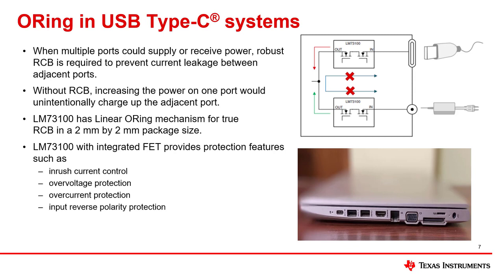To achieve reliability in an application, multiple power sources are connected together to form a single power source to a device. This is known as ORing. When multiple USB Type-C ports could supply or receive power, robust RCB is required to prevent current leakage between adjacent ports as shown in the figure. Without RCB, any buildup of reverse current leakage could cause permanent damage to the entire system. The LM73100 device is a good fit for this application as it has a linear ORing mechanism that gives true RCB, and it comes in a small 2 mm by 2 mm package size. As USB-C devices become increasingly popular, power protection for these devices must offer reliable features without sacrificing performance in high power delivery and high speed data transfer.